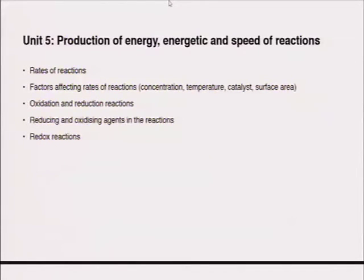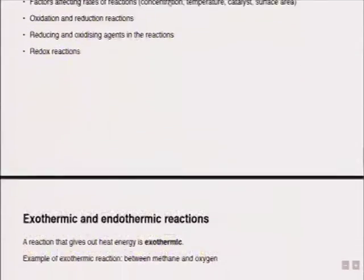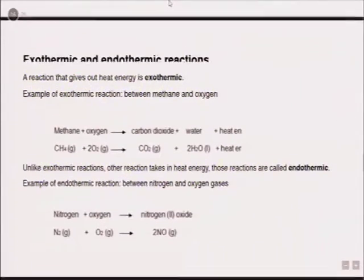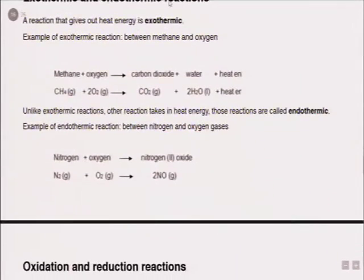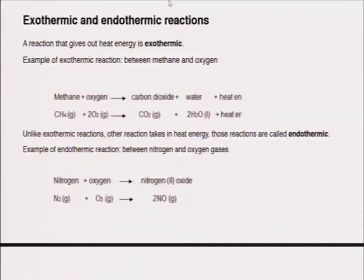The surface area is also a factor — if you have a large surface area, the chemical reaction will be faster. It's very important to go back to your study guide to understand with examples how these different factors can influence the chemical reaction, either reducing it or increasing it. You also need to understand oxidation, reduction, oxidizing agents, reducing agents and redox reactions. To differentiate between exothermic and endothermic reactions: exothermic reactions give out energy, while endothermic reactions take in energy.